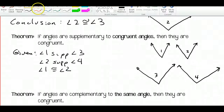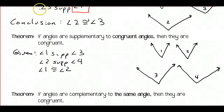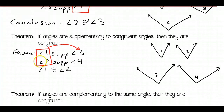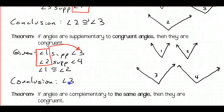If angles 1 and 2 are congruent, that means that these have to be congruent as well. We have angles that are supplementary to congruent angles, so our conclusion in this case would be that angle 3 is congruent to angle 4.